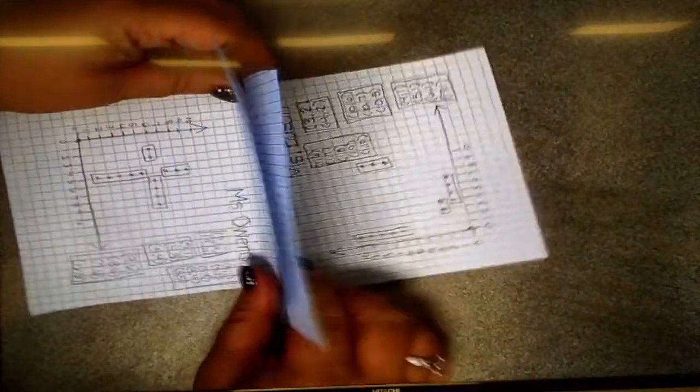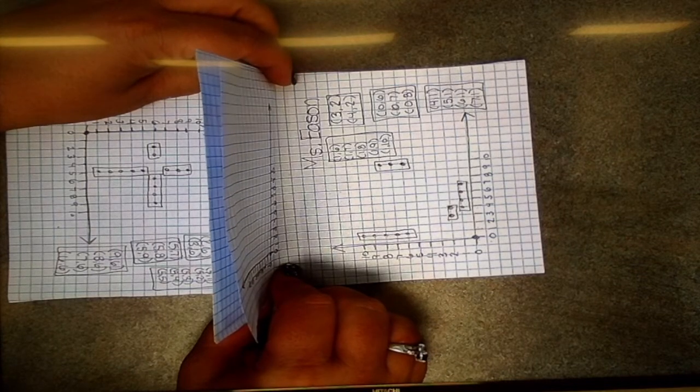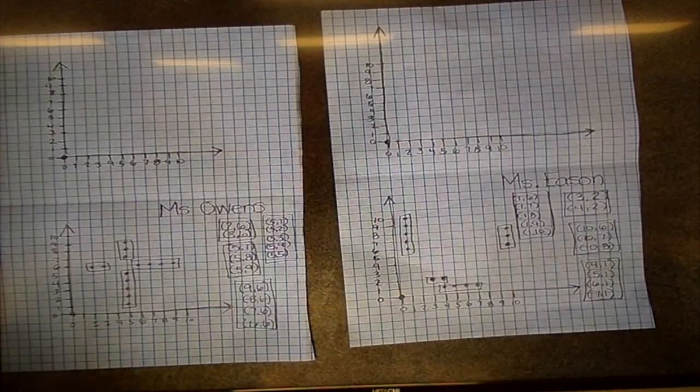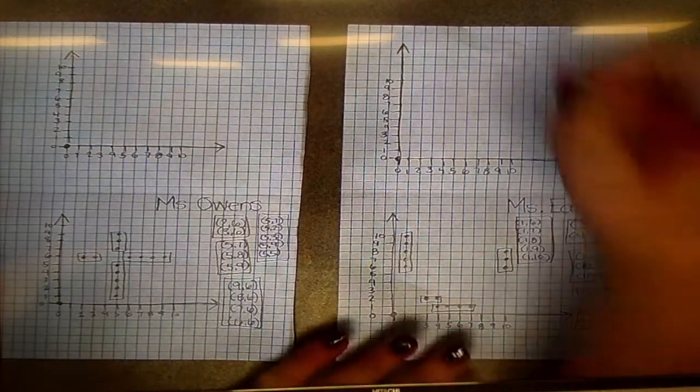Now, when you play with your partner, you will have your game board spacing this way, so that they can't see where your boats are. But, just for this video, I'm going to keep both papers flat on the table so you can see what to do.